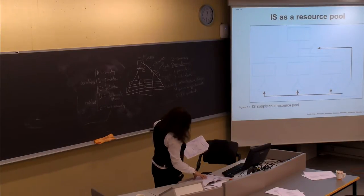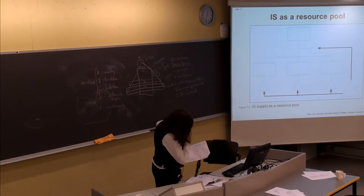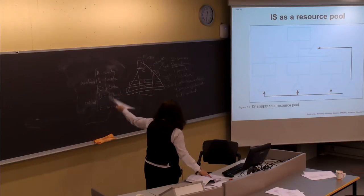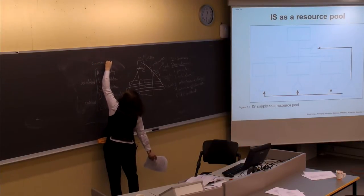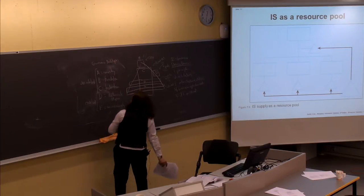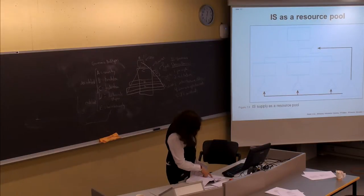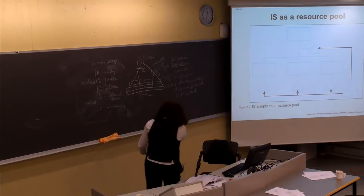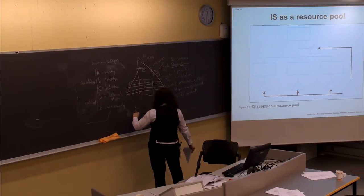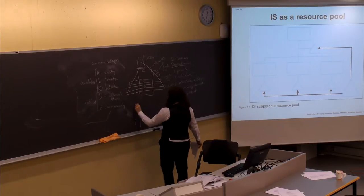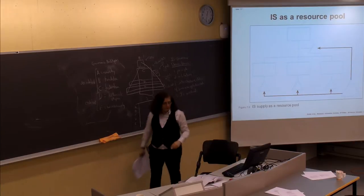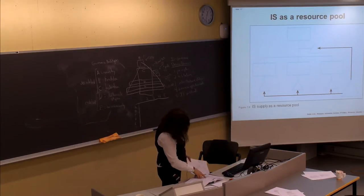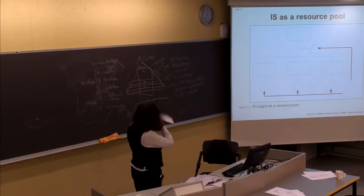On the next page, Table 7-2 shows different governance archetypes and the different IT governance domains. In a table with archetypes A through E and the five decision domains, an organization might follow different types of governance for different areas of decision-making.